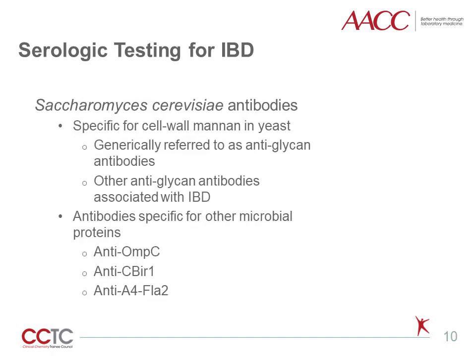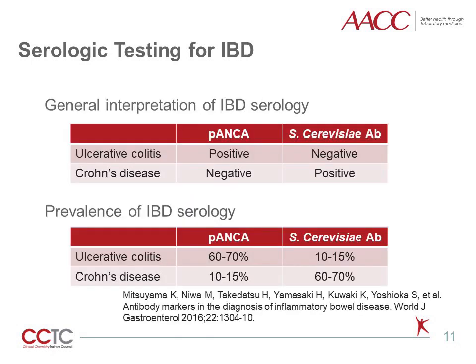The other serologic markers for IBD are the anti-Saccharomyces cerevisiae antibodies. These antibodies are specific for a cell wall mannan found in yeast and are referred to collectively as antiglycan antibodies. These are only one of many antiglycan antibodies found in patients with IBD and are possibly a reflection of the immune response against the GI microbiota. Patients with IBD can develop antibodies against a variety of microbial proteins, including OMP-C (the outer membrane porin C in E. coli), and CBIR1 and A4-FLA2, both of which are bacterial flagellum proteins. The bulk of serologic testing for IBD still centers around P-ANCA and Saccharomyces cerevisiae antibodies.